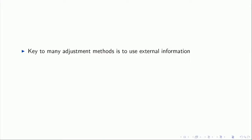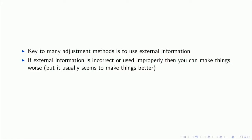The key to these methods requiring adjustments — for both probability and non-probability samples — is using external information. If that external information is incorrect or used improperly, you can actually make things worse. It's not a free lunch. If the information you're adding in is not good, you can make things worse. In my experience it generally seems to make things better, but doesn't often make things perfect. I think of these techniques as moving you in the right direction but not necessarily getting you to ground truth.